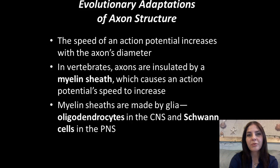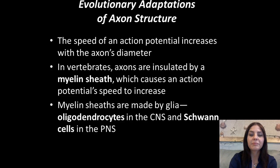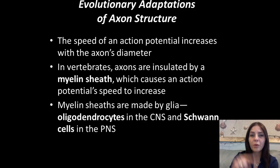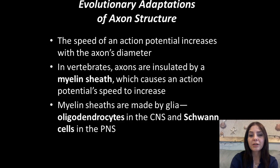Make sure you're able to write about these key scenarios. The speed of an action potential will increase with the axon's diameter. In vertebrates — animals that have backbones — axons are insulated by a myelin sheath, which causes action potential speed to increase because the signal skips from one node of Ranvier to the next. Myelin sheaths are made by glia and oligodendrocytes in the central nervous system, and by Schwann cells in the peripheral nervous system, where most sensory responses originate.